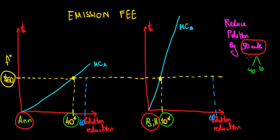But these 50 units of reduction are not proportional — we are not reducing pollution by 25 and 25 units. Let's see why this is a better case than reducing 25 and 25. For instance, if we do reduce 25 units of pollution each, let's say that would be here for N and 25 would be somewhere over here for Bill.